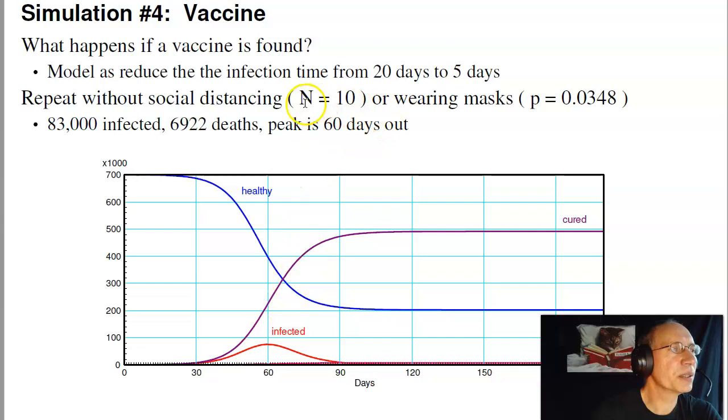If I re-run the simulation with no change, n times p is 0.348, I still wind up with a slight outbreak, but it is much, much less severe. But there is still an outbreak. You still wind up with almost 500,000 people infected, 7,000 deaths, and a peak about two months out.